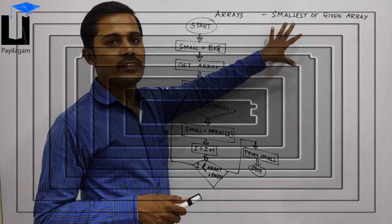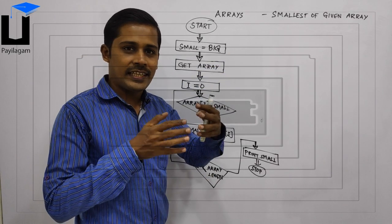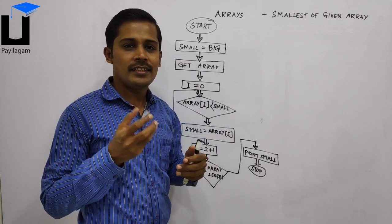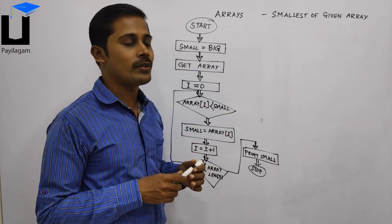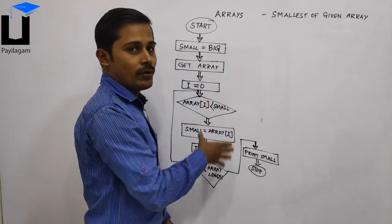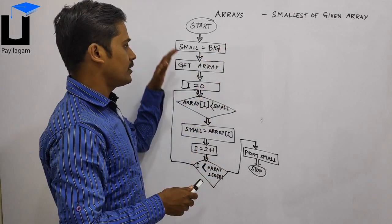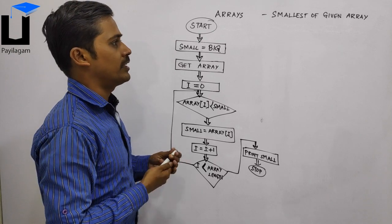This program finds the smallest of a given array. There are many numbers in an array, and this program finds the smallest. There is a flowchart — let me explain it to you.